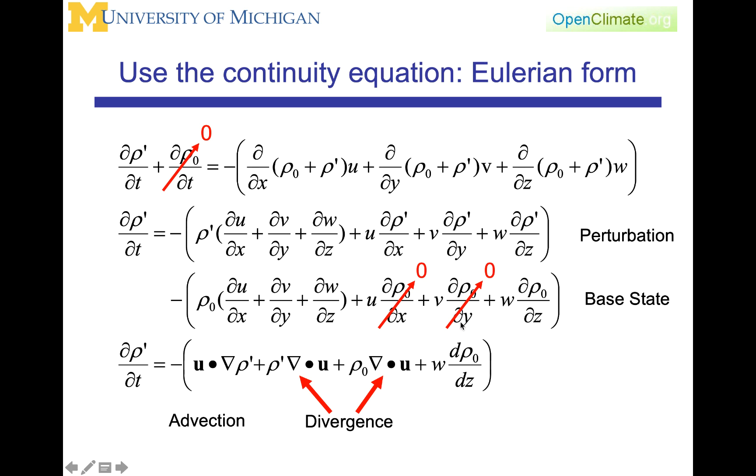What we arrive at is an equation for the deviation density, that is, the difference from the average. The partial with respect to time, the local time rate of change, is going to be equal to this term here, which is an advection term—the advection of the density deviation. We're going to have a term that's ρ′ and ρ₀, each in terms of the divergence of the velocity field, and then we are left with a term that is the vertical advection of w times dρ₀/dz.